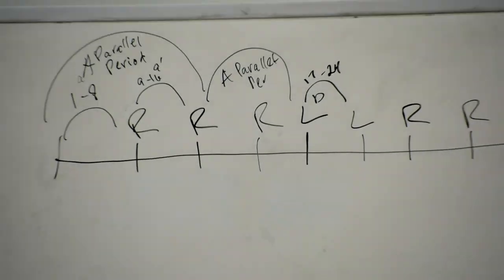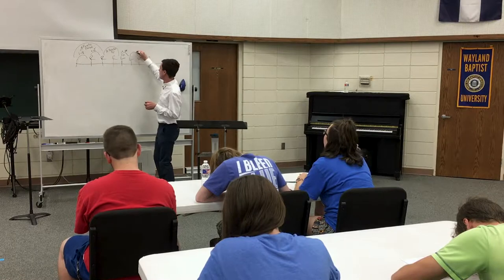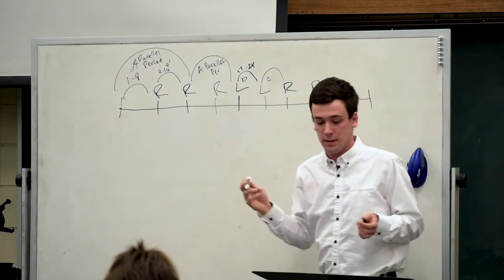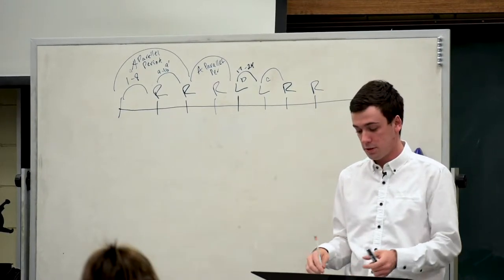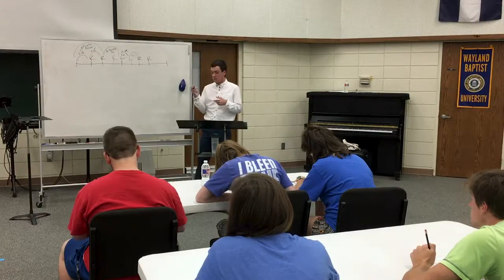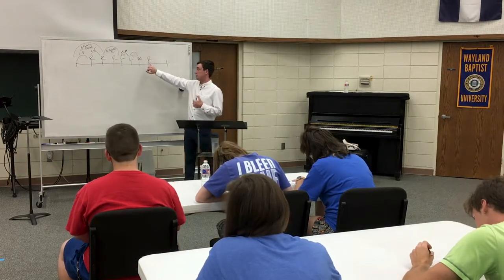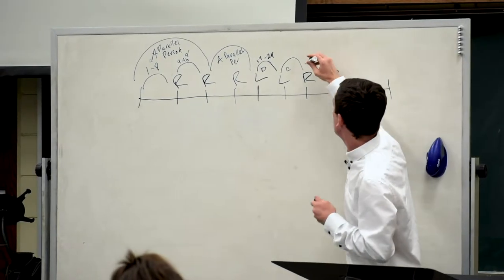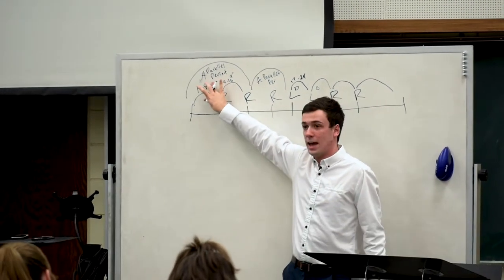And then we also felt like the next phrase was something we hadn't heard before, right? So let's go ahead and put another arc over that and put a little C there. Measure 25 — we're going to put a little c with an arc over measures 25 through 32. And we noticed that there was also a repeat at the end of that, meaning that we go back, which explains the reason why we heard the similarity.